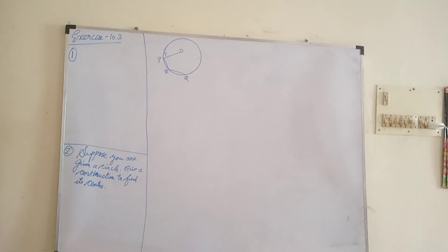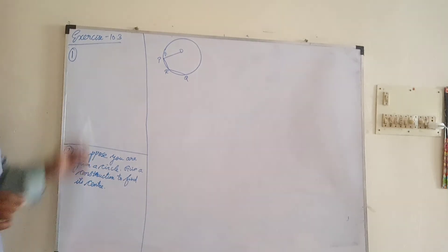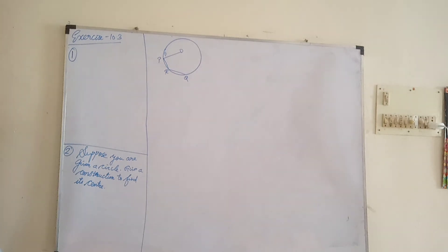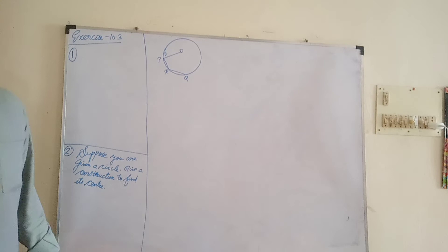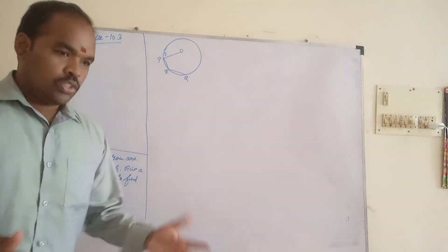Exercise 10.3, first question: draw different pairs of circles. How many points does each pair have in common? What is the maximum number of common points? So they are saying that different pairs of circles are there, and we can draw them. Let's see how many points each pair has in common. I am drawing a circle now.